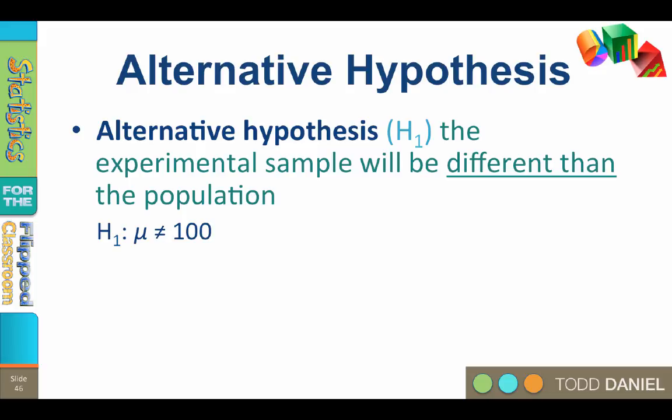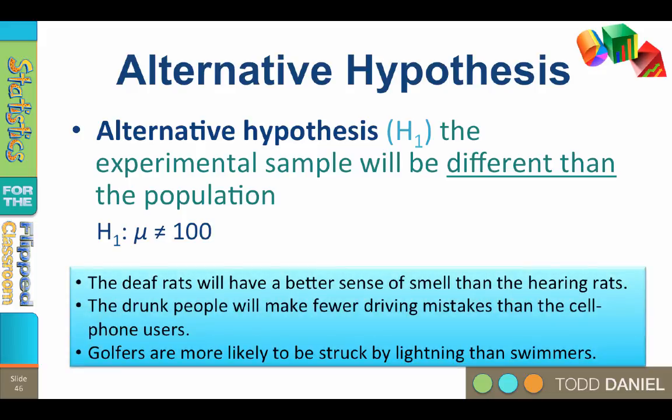Here are examples of ways that you could write an alternative hypothesis: The deaf rats will have a better sense of smell than the hearing rats. The drunk people will make fewer driving mistakes than the cell phone users. Golfers are more likely to be struck by lightning than swimmers. Later we're going to learn that alternative hypotheses can be directional or non-directional. For now, just concentrate on learning that there are null hypotheses and alternative hypotheses, and that the null hypothesis is the one that assumes no difference.